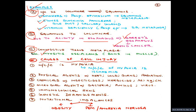Now, causes of cell injury. The most common cause is hypoxia, and the most common cause of hypoxia is ischemia — reduced blood flow. Other causes include physical agents such as heat, cold, burn, and radiation; chemicals like insecticides, herbicides, arsenic, mercury, and cyanides; microbial agents including bacteria, fungus, and viruses; immunological reactions; genetic derangements; and nutritional imbalances — excess leading to obesity, deficiency leading to protein energy malnutrition or anorexia nervosa.